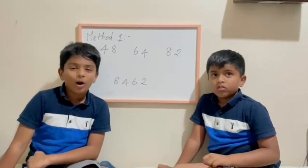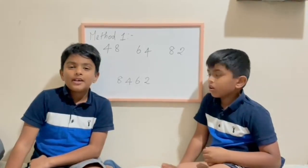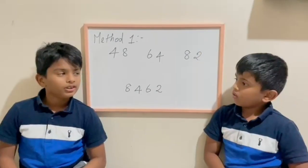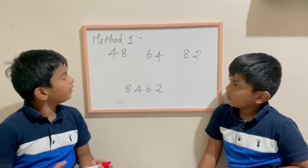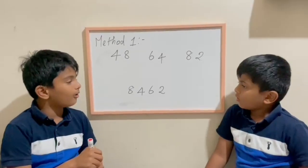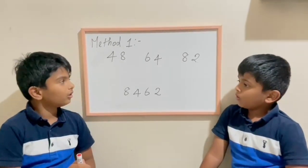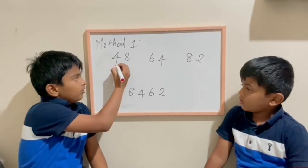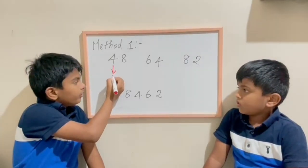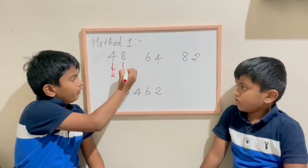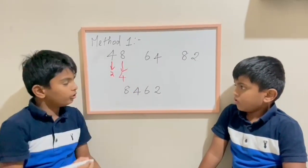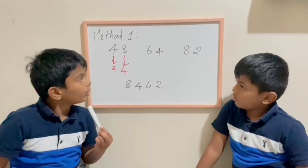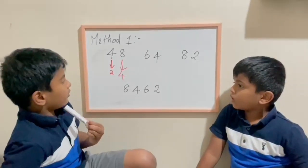So halving method 1: if all of the numbers are even numbers, then it's very easy to do. For example, right, can you tell me the answer for 48 half? 24. Correct. So the trick is 4 half is 2, 8 half is 4. 24, right, was correct.